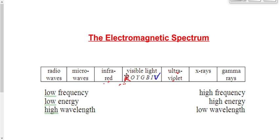These are listed in order of increasing frequency. As we go from left to right, the frequency goes up, and so does the energy. Wavelength is inversely related to frequency, so as frequency goes up, wavelength goes down. Radio waves have a low frequency, low energy, and a high wavelength, whereas gamma rays have a high frequency, high energy, and low wavelength.